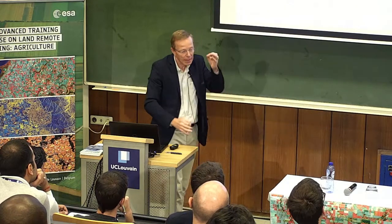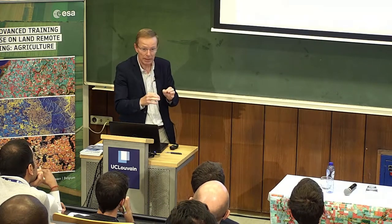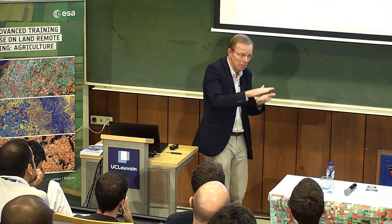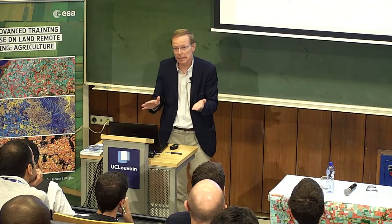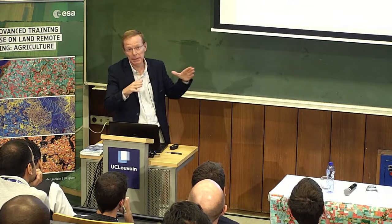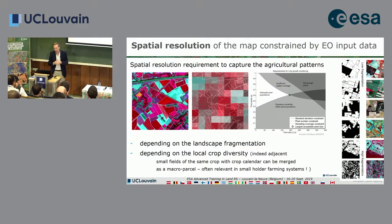Of course, rice planted at different times of the year across different parcels is different. You have the same in China with maize everywhere—very tiny fields, but no problem with 30 by 30 meter pixels. Therefore, it's not only looking at parcel size, but also the local crop diversity to see if the patterns of different crop types require a given resolution or not.